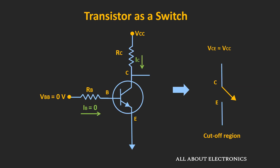During operation, the transistors operate in the cutoff and saturation regions. When a transistor operates in the cutoff region, it acts as an open circuit, and the voltage Vce is approximately equal to Vcc. When it operates in the saturation region, it acts as a closed switch, and the voltage Vce is approximately equal to 0V.